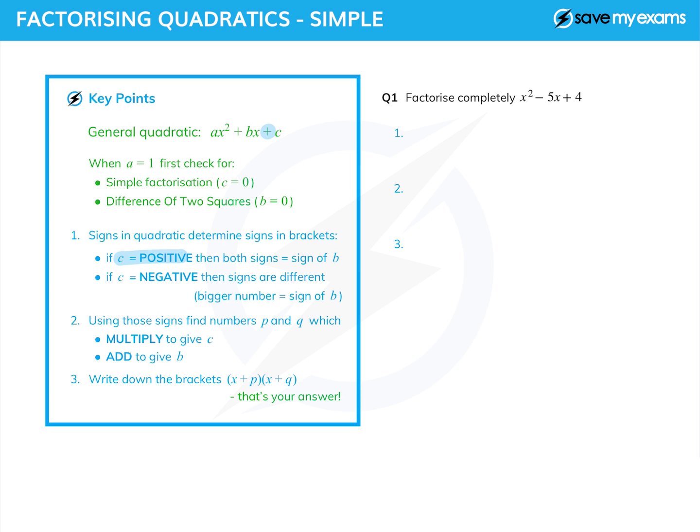We look at the sign of c. If it's positive, then both signs in the brackets are equal to the sign of b. If c happens to be negative, then both signs are different—a plus in one bracket and a minus in the other. The bigger number will have the sign of b.